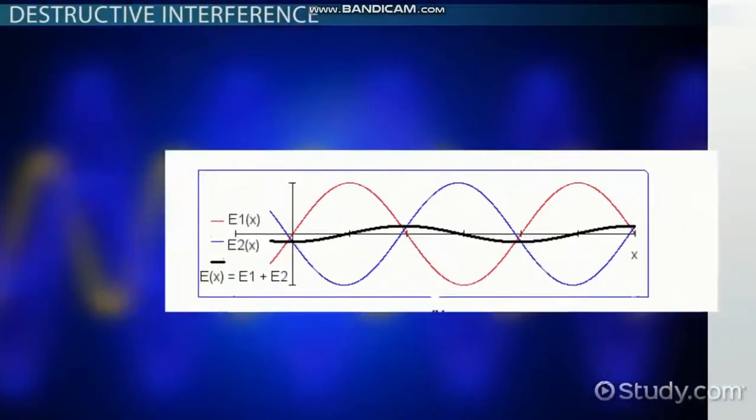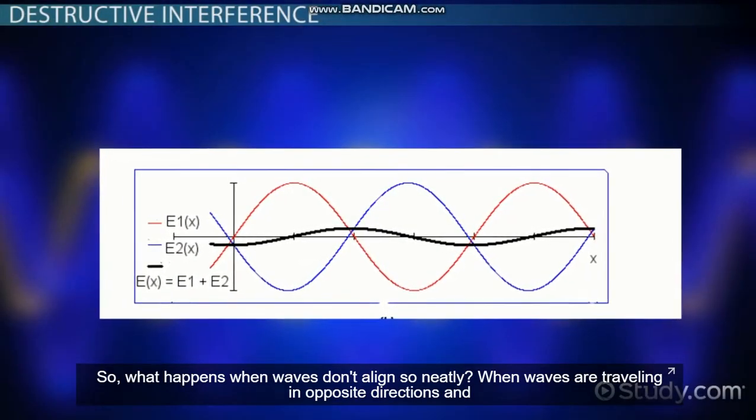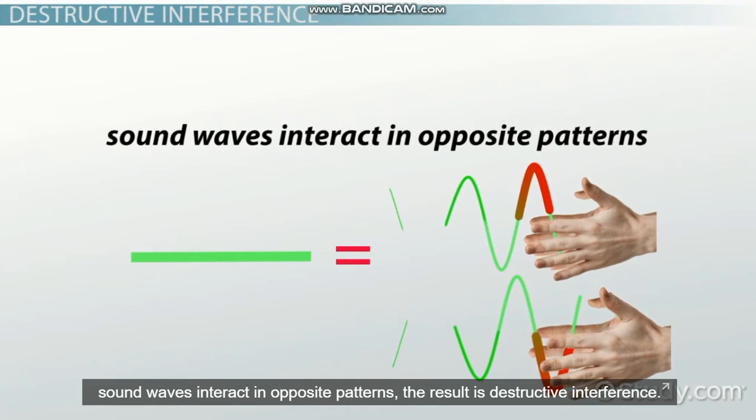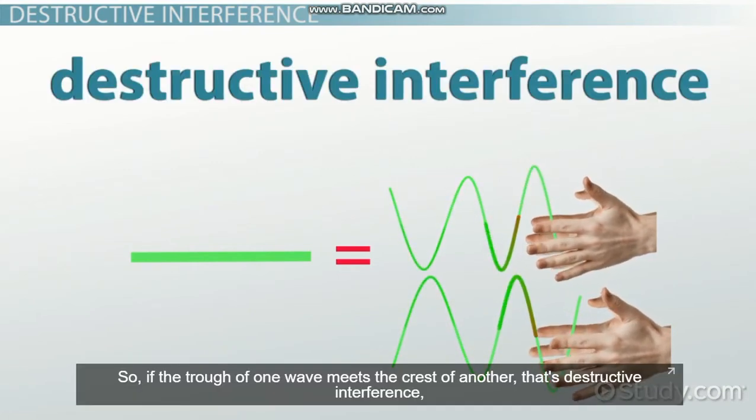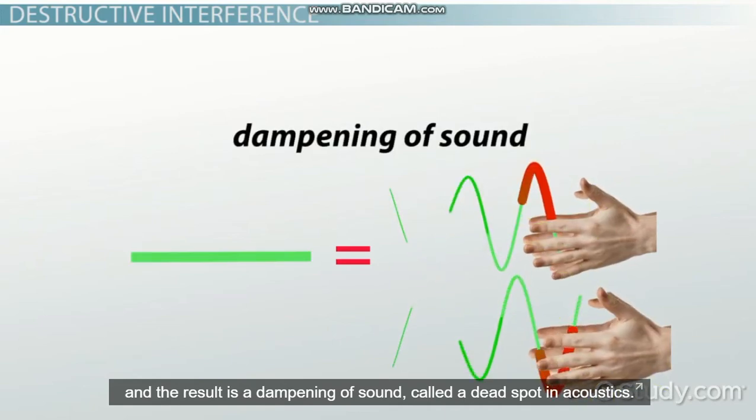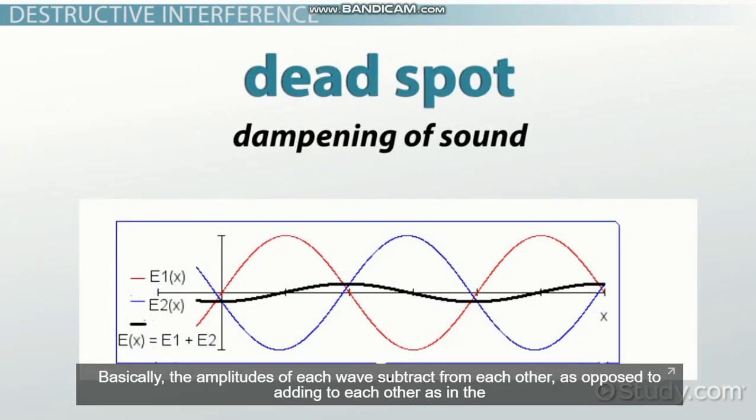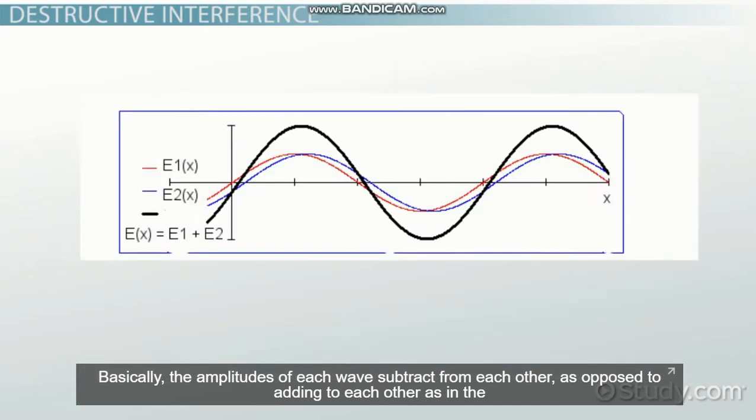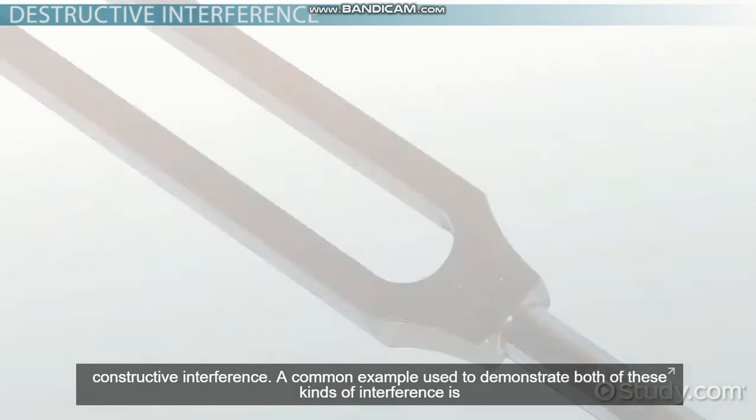So what happens when waves don't align so neatly? When waves are traveling in opposite directions and sound waves interact in opposite patterns, the result is destructive interference. If the trough of one wave meets the crest of another, that's destructive interference, and the result is a dampening of sound called a dead spot in acoustics. Basically, the amplitudes of each wave subtract from each other, as opposed to adding to each other as in constructive interference.